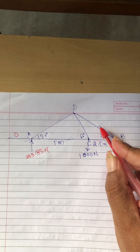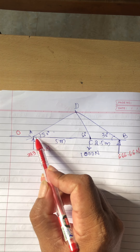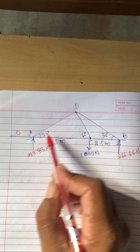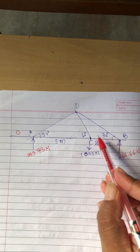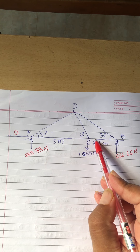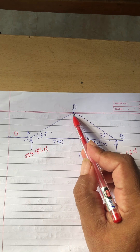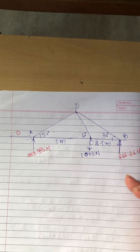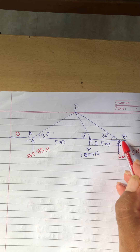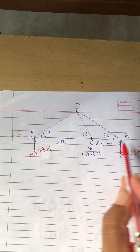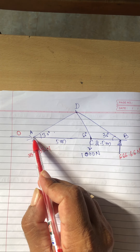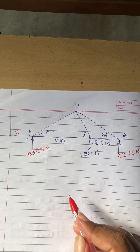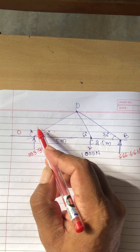Consider the free-body diagram. Either you can consider the FBD of joint A, where the unknown members are only AD and AC. You cannot go to joint C because unknown members are 1, 2, 3. You cannot go to joint T because unknown members are also 3. You can go to joint B, where right now you are having 2 unknowns. Either you can go to joint A — then you decide where to go.